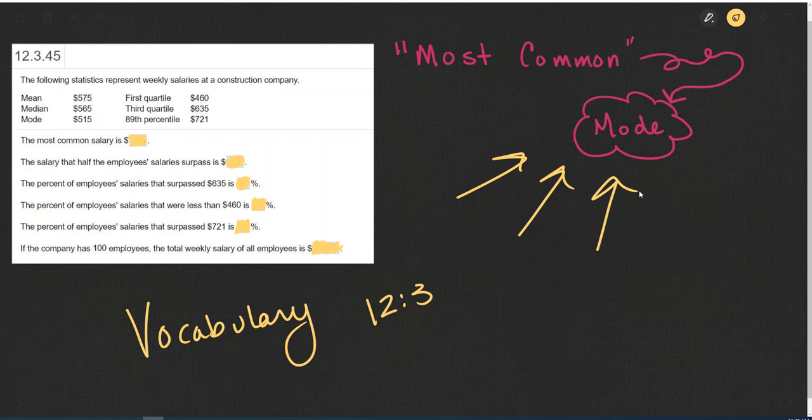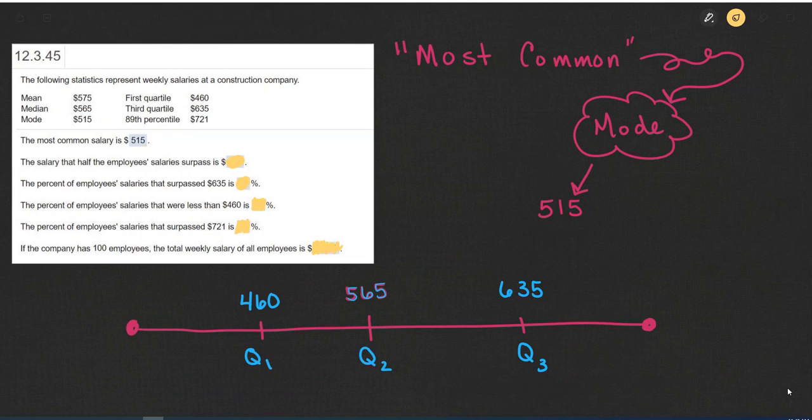So another way of asking question number one, the most common salary is, what is the mode? And the mode is simply 515. So we can see that that is in fact the correct answer for the first question. The most common salary is 515.